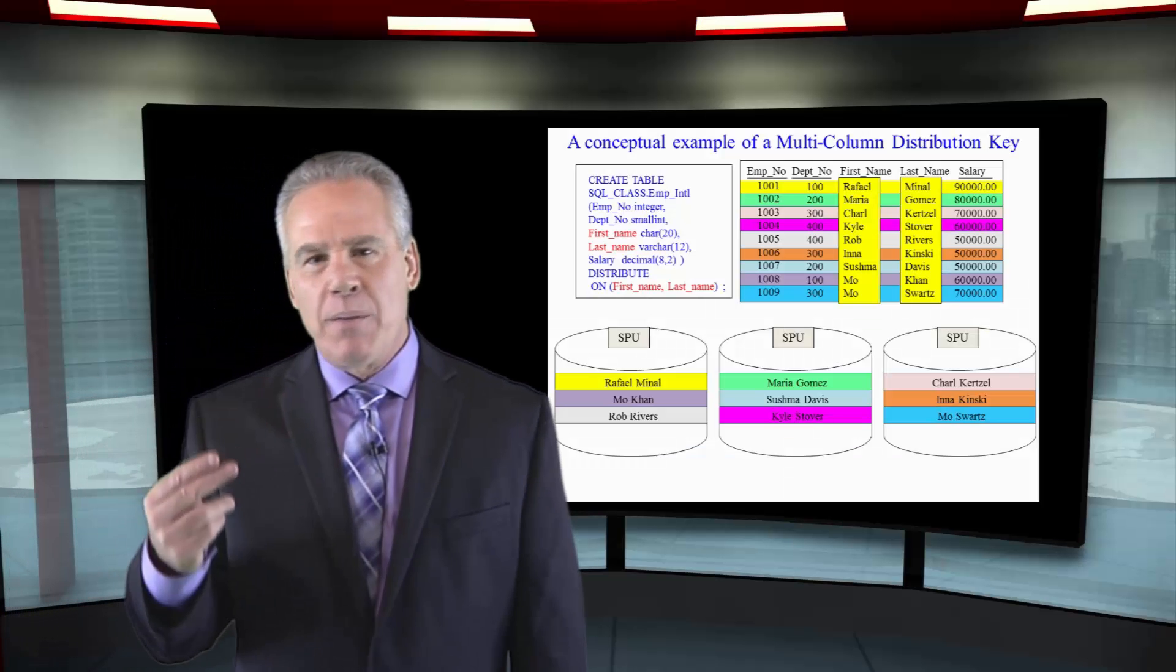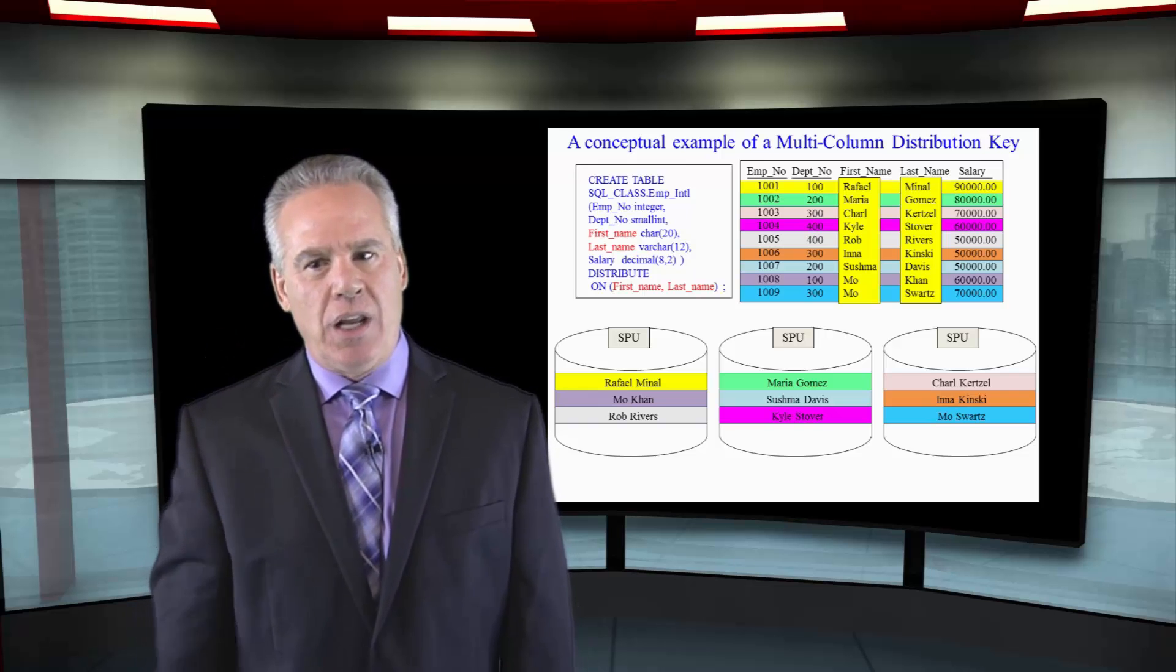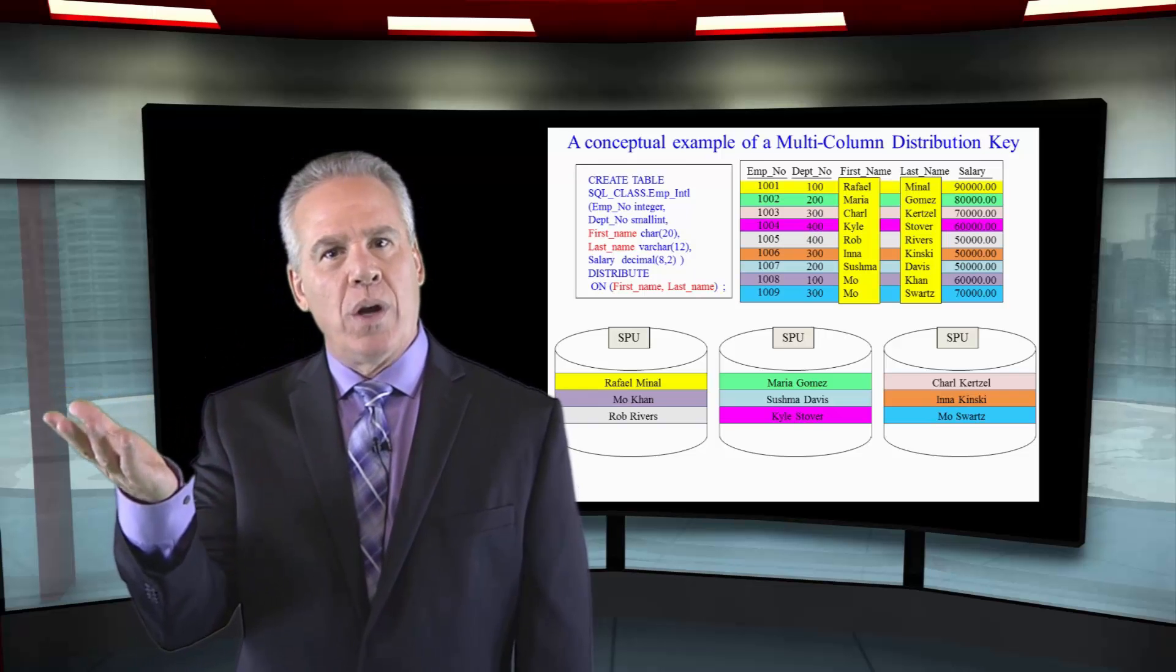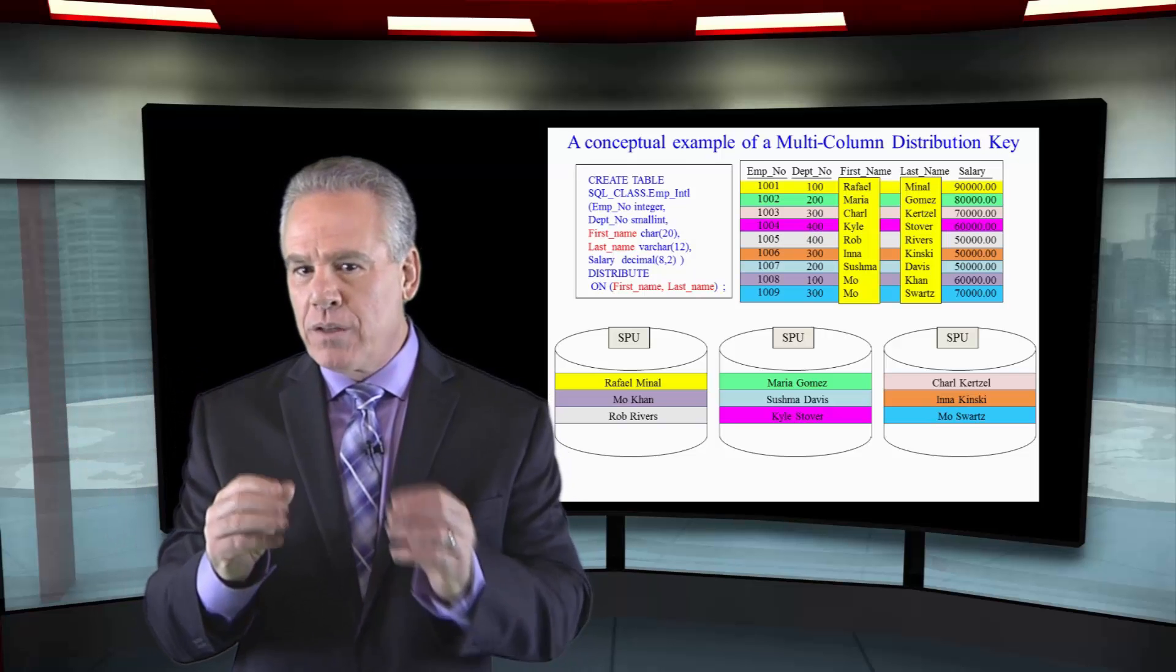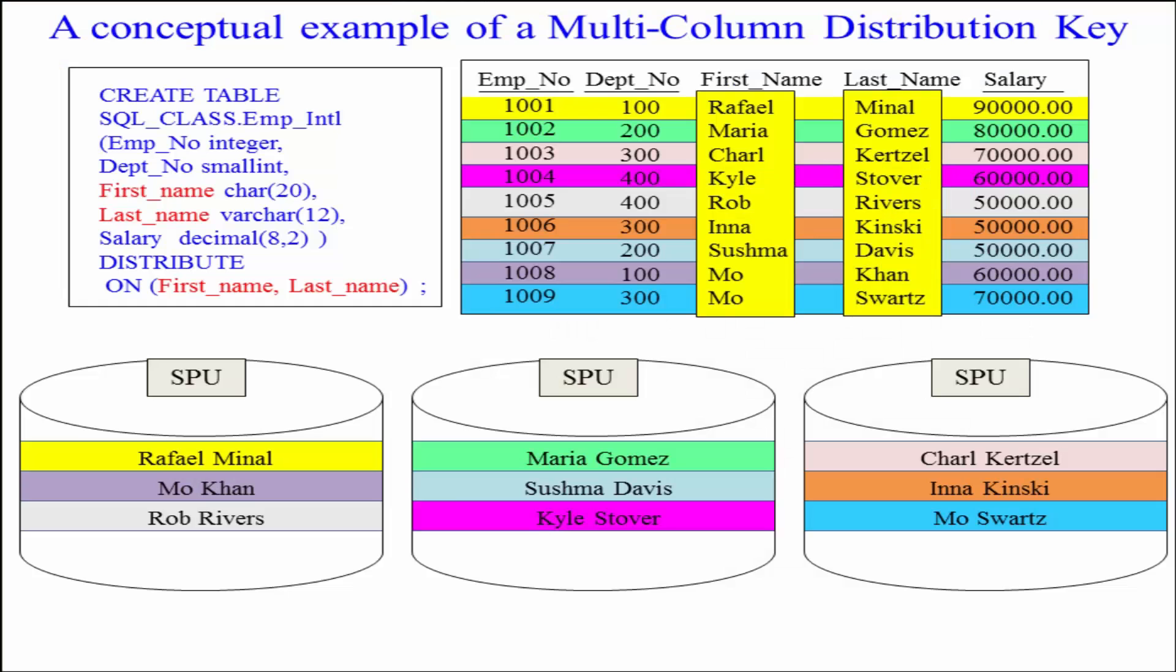You know, if you think about it, you might pick just last name as your distribution key and all of the Smiths go to one SPU. But if you picked first name and last name as your distribution key, the Mary Smith would go to one SPU and the John Smith would go to another SPU. And that's quite often why you might have a multi-column distribution key.